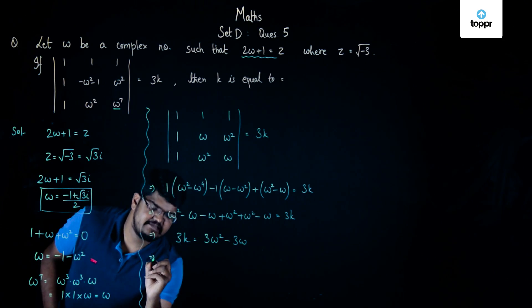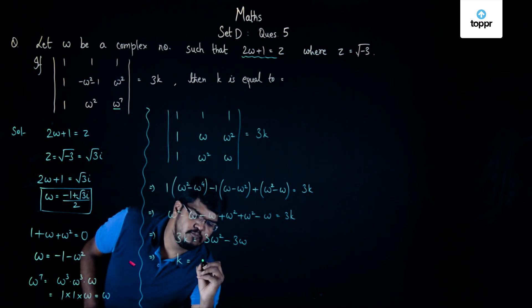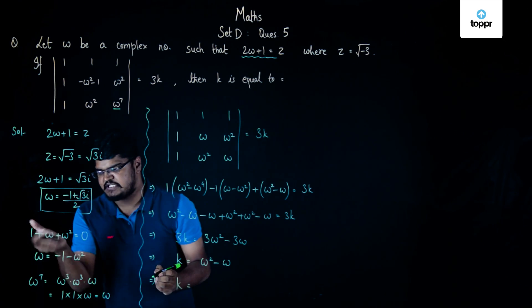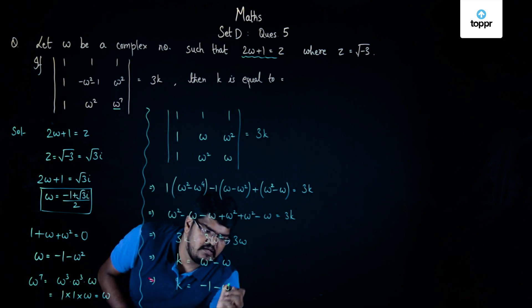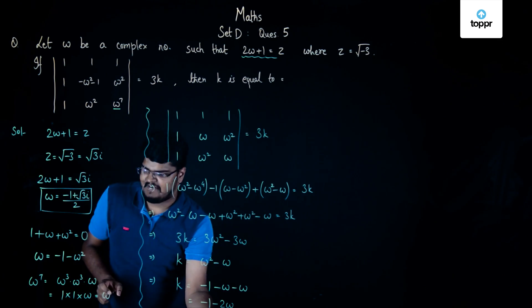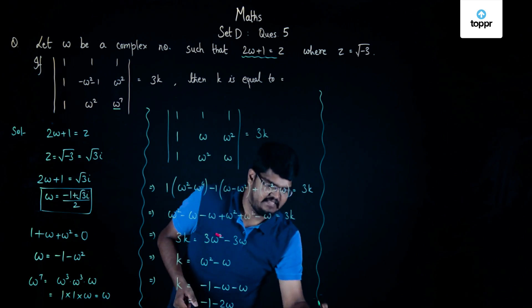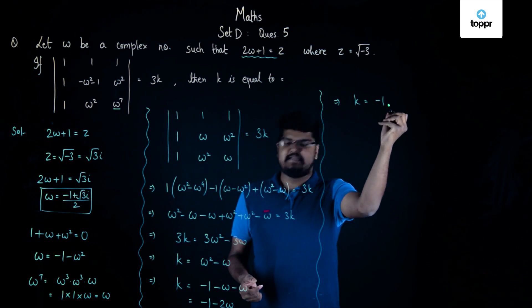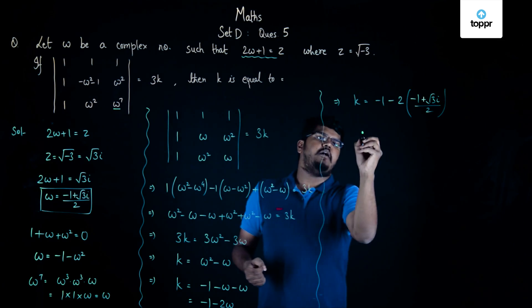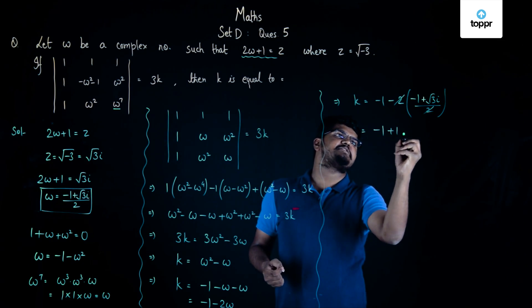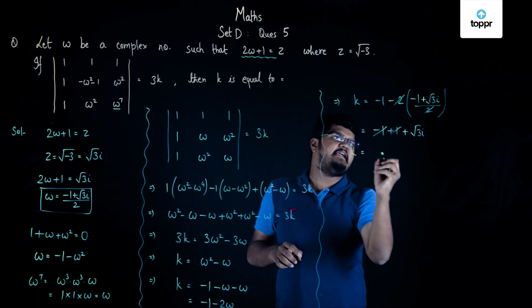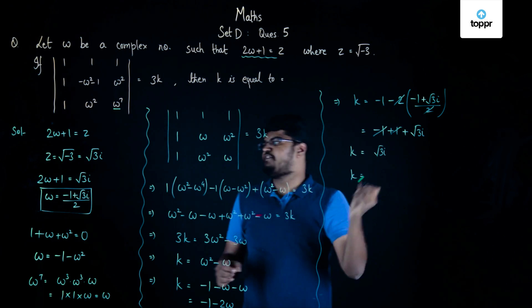We take 3 common on the right hand side and cancel 3 from both sides, so k equals omega squared minus omega. We know that omega squared equals minus 1 minus omega from the earlier equation, so k becomes minus 1 minus omega minus omega, giving k equal to minus 1 minus 2 omega. Substituting the value of omega as minus 1 plus root 3 iota by 2, the 2s cancel, giving minus 1 plus 1 minus root 3 iota. The minus 1 and plus 1 cancel, so k equals minus root 3 iota, and since root 3 iota is our z, k equals minus z.